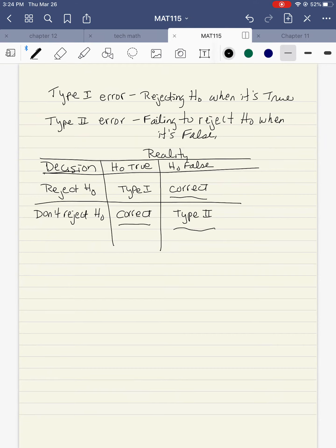There are two types of error. A Type I error is rejecting the null hypothesis when it's true, and a Type II error is failing to reject the null hypothesis when it's false. You have a Type I error when the null hypothesis is true and you reject it. You have a Type II error when the null hypothesis is false and you do not reject it.